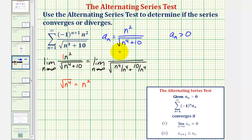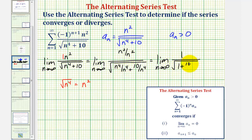Simplifying, we have the limit as n approaches infinity of: the numerator is one, and the denominator is the square root of one plus ten divided by n to the fourth. In this form, we can more easily see this limit equals one, since the fraction ten over n to the fourth approaches zero as n approaches infinity. So we'd have one over the square root of one, which is just one. This does not equal zero, and therefore the alternating series diverges by the nth term divergence test.